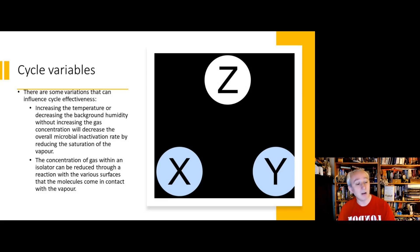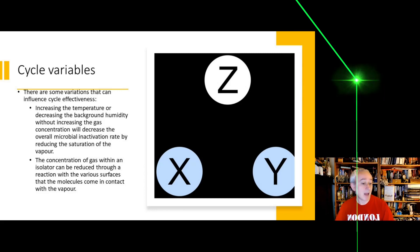So when we're running hydrogen peroxide vapor systems, we need to check critical parameters, and we can add to these the time as well as the concentration, temperature, humidity, to make sure all of those are right. Much like running an autoclave, there's a series of key parameters that need to be assessed.